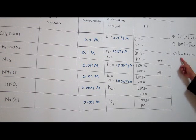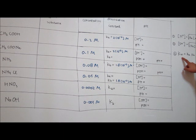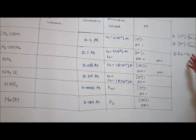The third formula is Kw equals Ka times Kb. Sometimes they give you Kb of a weak base and you need to calculate Ka of the conjugate acid of that base, so you might need formula number three. Similarly, formula number three is also used when they give you Ka of a weak acid and you need to calculate Kb of the conjugate base of that acid. We are going to use this formula later on.